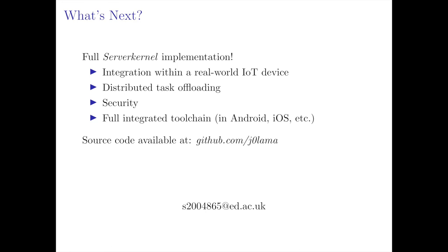To finish, I want to mention some open research problems that need to be addressed for a fully functional Server Kernel implementation. First, it is okay to have prototypes on development boards, but the goal is to implement it on real-world devices. Next, specifying and implementing an efficient way to offload tasks across multiple devices with Server Kernel. Also, creating a full secure protocol to send applications to the Server Kernel, authenticate both sides, and guarantee that malicious applications are detected and dropped. Finally, a fully integrated toolchain that automatically performs all uploading procedures. You can find all the source code of John OS on my GitHub account. Thank you so much.